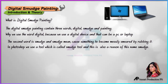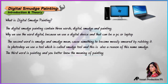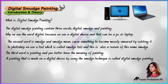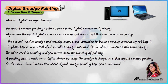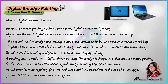In Photoshop we use a tool for this painting that is called the smudge tool, and this is also a reason for the name 'smudge'. The third word is 'painting', and you better know the meaning of painting. A painting that is made on a digital device by using the smudge technique is called digital smudge painting. So this was a little introduction about digital smudge painting — hope you understand.